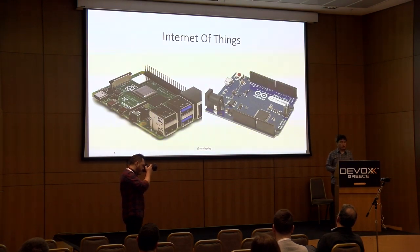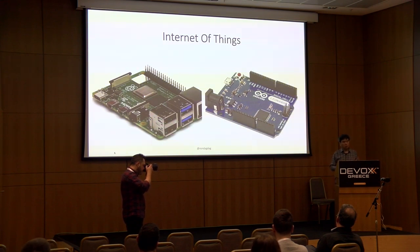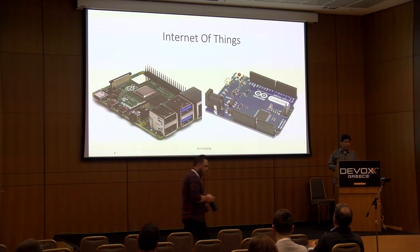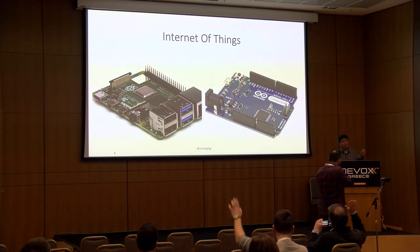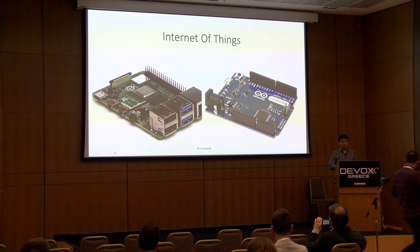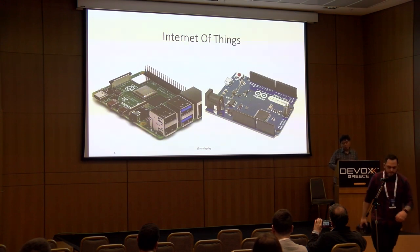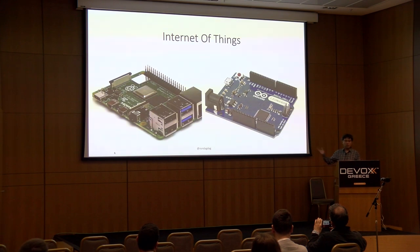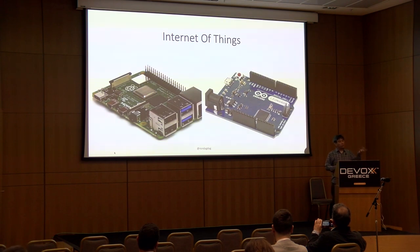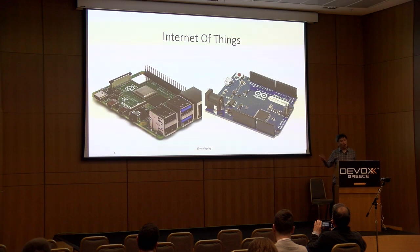Typically when you start development you have two choices: Arduino devices and Raspberry Pi. Raspberry Pi is a great place to learn Linux — it's an easier way to get started. Arduino is a microcontroller versus a microprocessor. A Raspberry Pi runs a full operating system, while an Arduino does not have its own operating system.